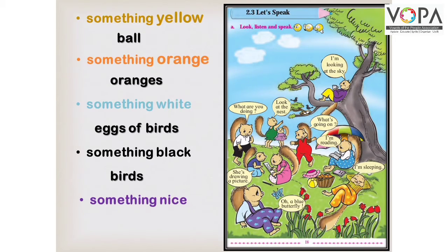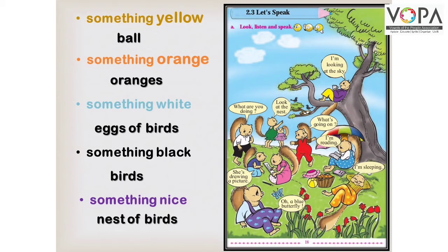Something nice — और आपको क्या अच्छा नज़र आ रहा है पिक्चर के अंदर? Nest of birds — यहाँ पर हमें यह जो bird का nest है वो बहुत ही अच्छा खूबसूरत नज़र आ रहा है। तो बच्चों, मैंने आपको सिर्फ एक-एक example दिया है, आपको और जो अच्छा नज़र आ रहा होगा, अपने parents को बताना है।